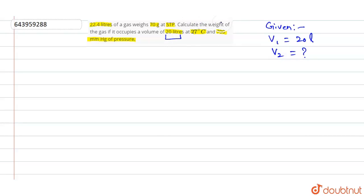V2 is to be found. And what is P1 here? P1 is, if you see here, it is 700.